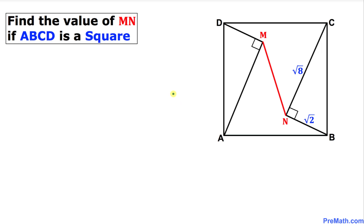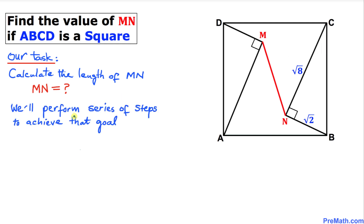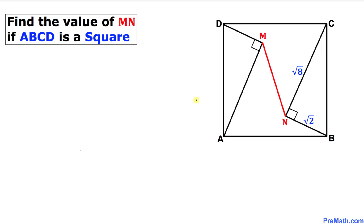Welcome to Pre-Math. In this video tutorial, we are going to calculate the distance between two points M and N in a given square ABCD. We have a right triangle BNC where one leg is √2 and the other leg is √8. Our task is to calculate the length of MN, and we will perform a series of steps to achieve that.